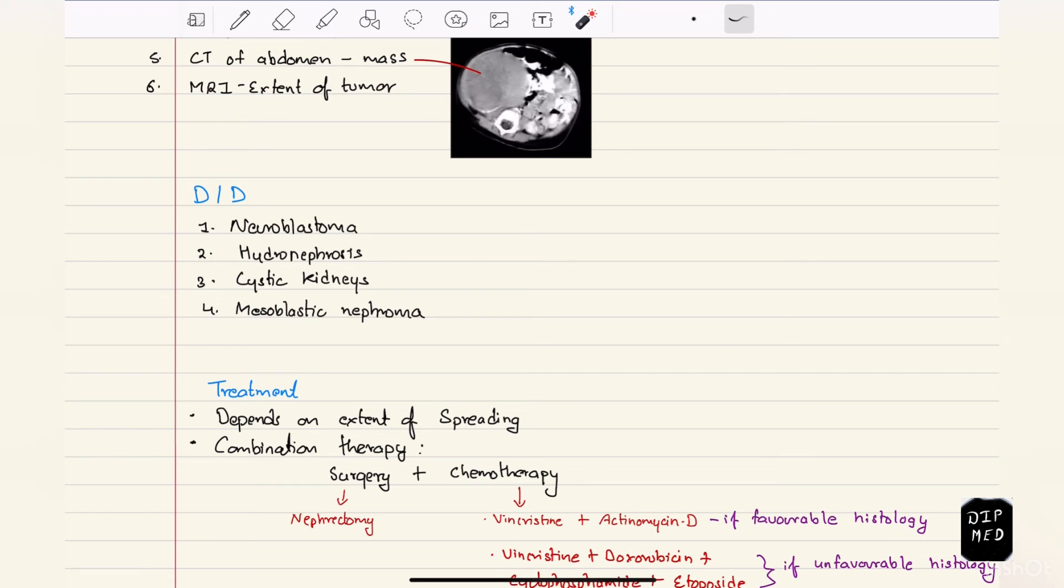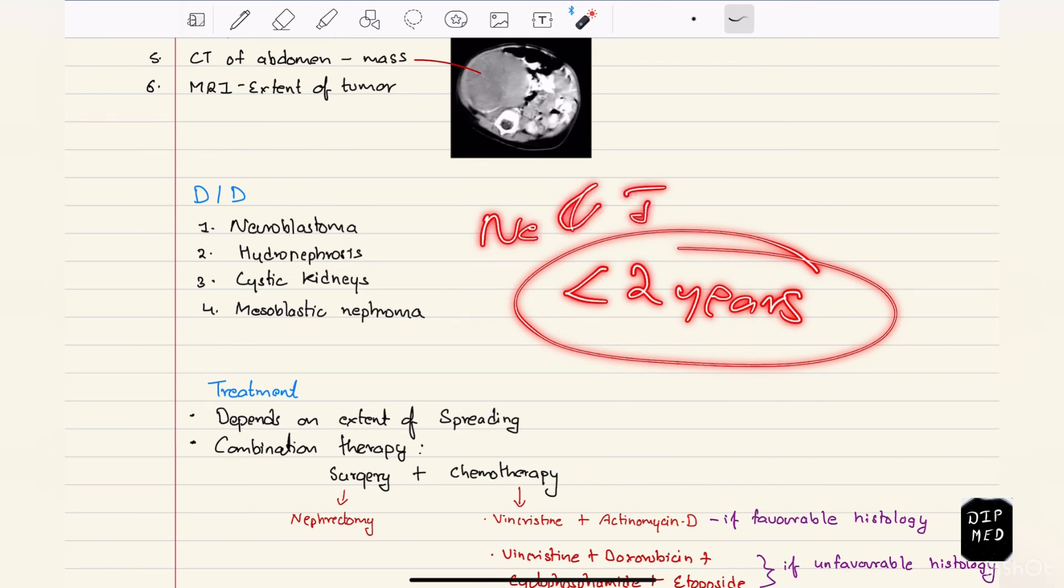Hydronephrosis is not even a tumor, it is swelling of the kidney due to obstruction of the urinary passages. Cystic kidneys such as polycystic kidney disease, and mesoblastic nephroma, also a renal malignancy in children but usually seen in children less than two years old, mostly in neonates and infants.